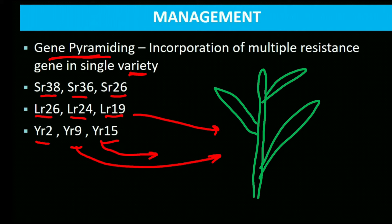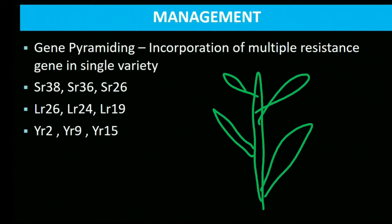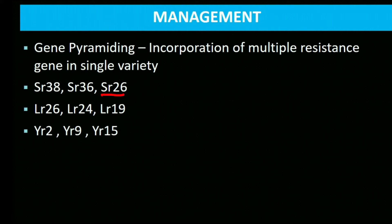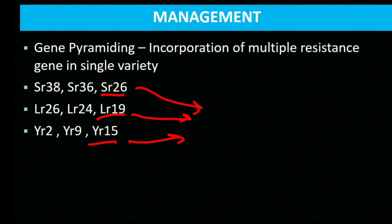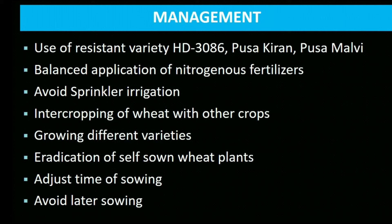Different combinations of genes can be used to create different varieties for different areas. Use resistant varieties like HD3086, Pusa Kiran, and Pusa Malvi — HD3086 is the latest wheat variety. Apply balanced amounts of nitrogenous fertilizer — excess nitrogen increases vegetative growth and reduces disease resistance.